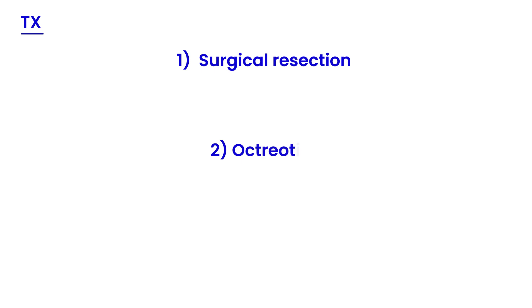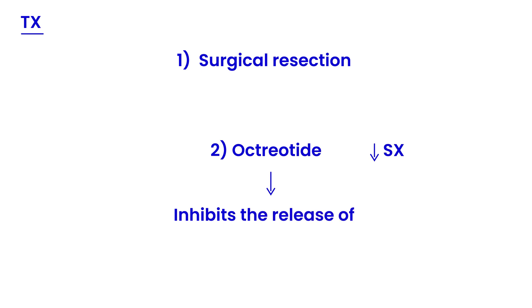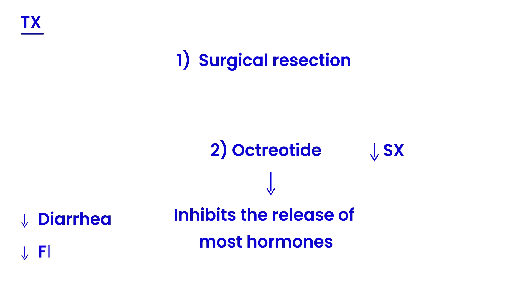What is the treatment? Like most tumors, surgical resection of the actual tumor is performed. But in addition, a drug called octreotide is given to decrease symptoms. Octreotide works because it inhibits the release of most hormones, and when you inhibit the release of these hormones you don't get the diarrhea and flushing that occurs in carcinoid syndrome.